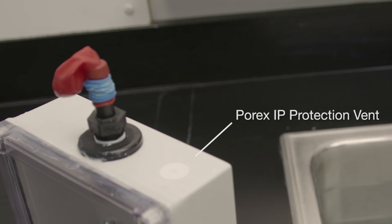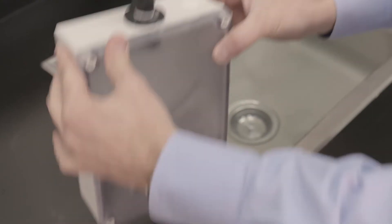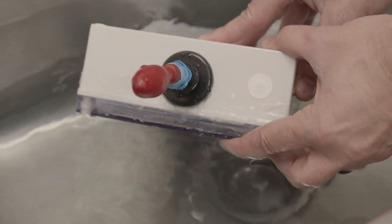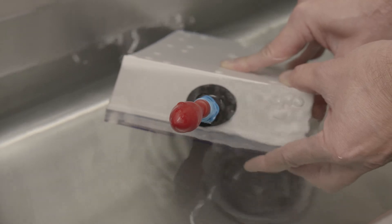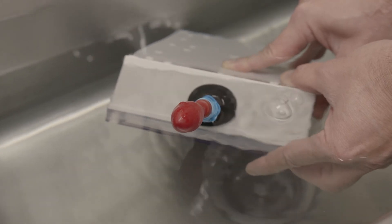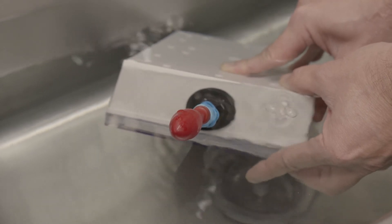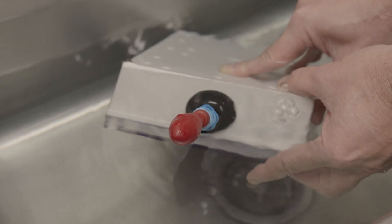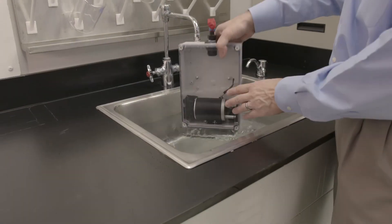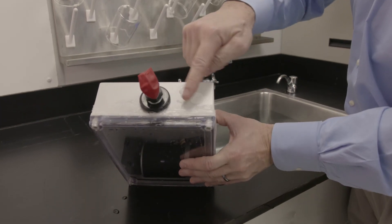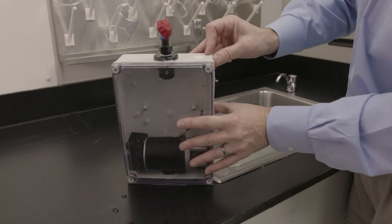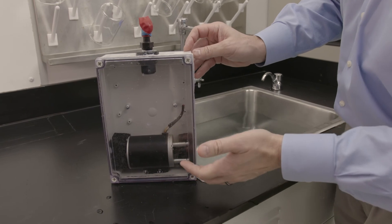Porex protection vents are a critical part of any sealed enclosure system. As you can see, the air is escaping through the Porex IP protection vent and the balloon is not inflating. Even though the vent was fully submerged under the water, no water has entered the enclosure.